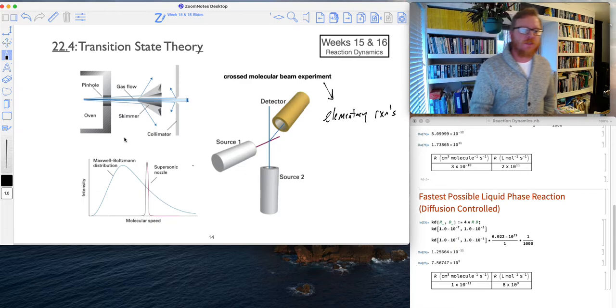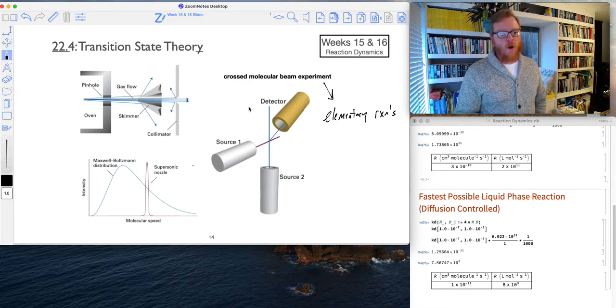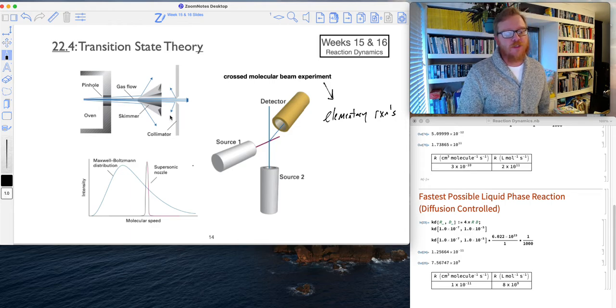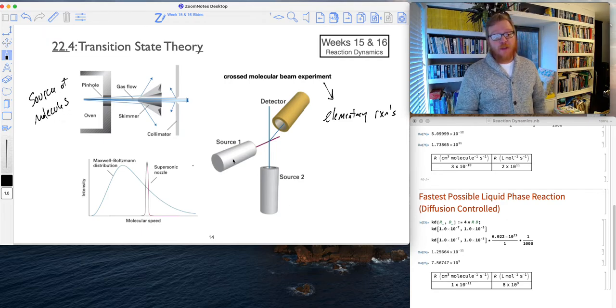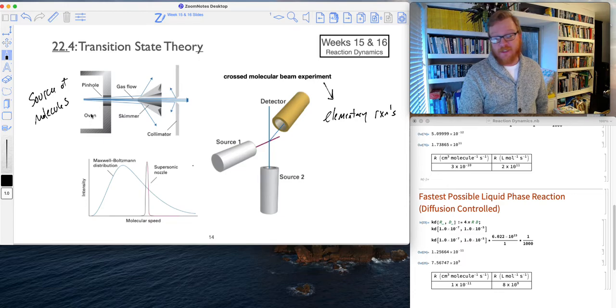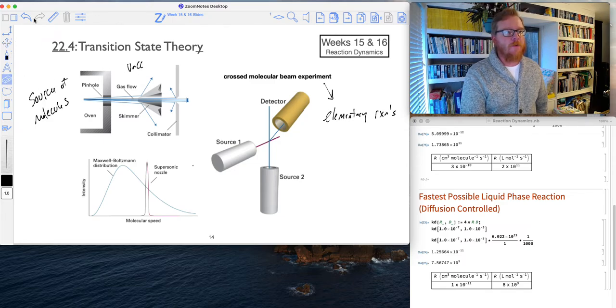So it starts with what we call a supersonic nozzle. And so that's got several components to it. So typically we would have some source of molecules. And you notice here it says that it's got this in an oven and in a pinhole. So what that typically means is on this side of the pinhole, it's going to be vacuum.